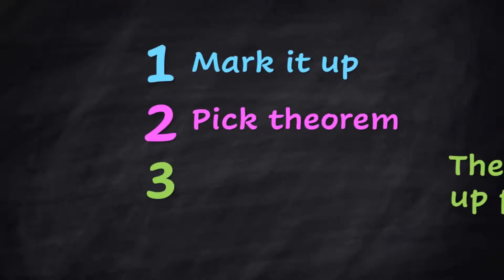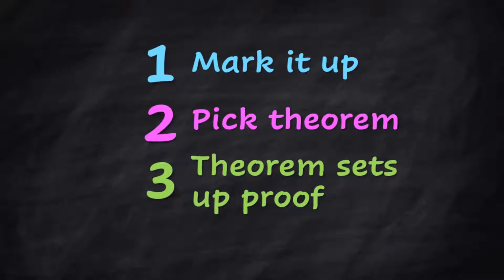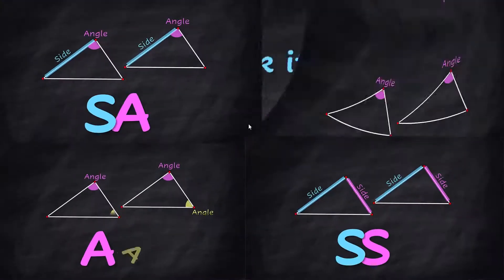Triangle proofs in three simple steps. Mark it up. Pick your theorem. The theorem will help you set up your proof. Let's do proofs together right now step by step and I'll review the theorems as we need them.